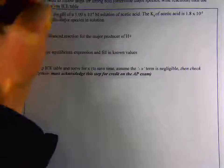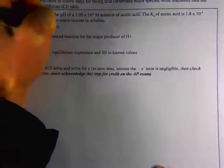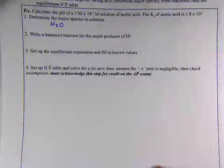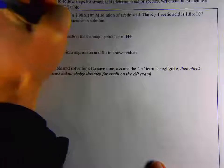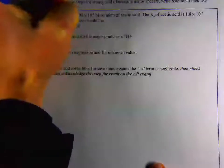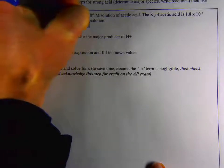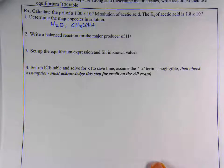Number one, determine the major species in solution. In a solution of acetic acid we're going to have water certainly. We are also going to have the acetic acid which you need to have this formula memorized. It's CH3COOH. That's the way I write it.